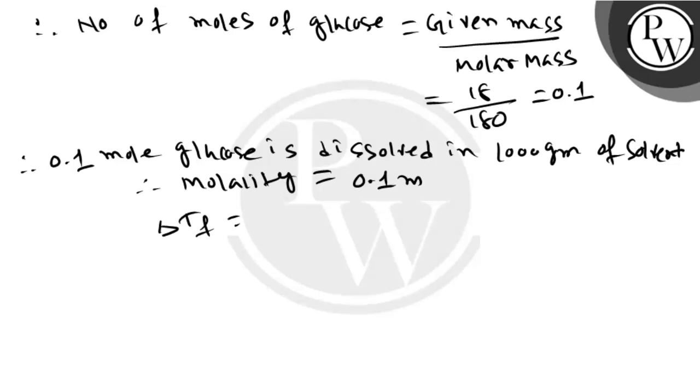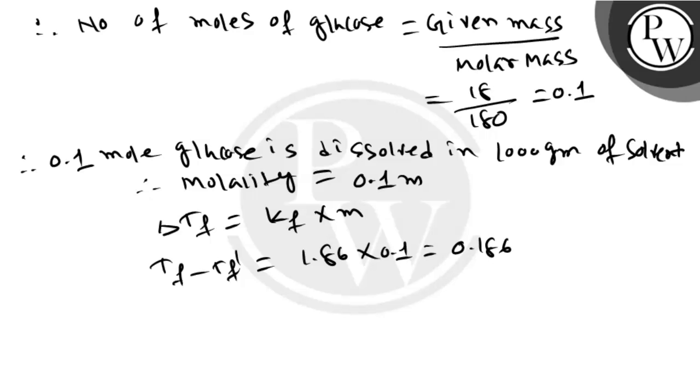Now, delta Tf is equal to Kf into M. Tf minus Tf dash is equal to 1.86 into 0.1, which is equal to 0.186. Now, value of Tf is 0 minus Tf dash is equal to 0.186. Therefore, Tf dash is equal to minus 0.186 degree Celsius.